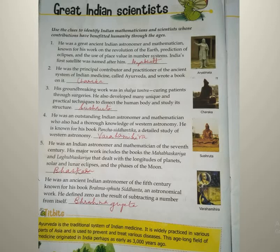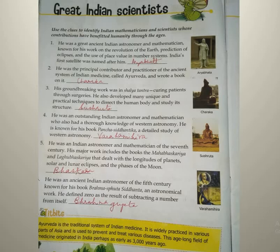He was an outstanding Indian astronomer and mathematician who also had a thorough knowledge of Western astronomy. He is known for his book Panch Siddhantika, a detailed study of Western astronomy. Astronomy is related to space, planets, galaxies — everything which is in space. He was very much interested in astronomy and also wrote the book Panch Siddhantika. The question may also arise: who is the author of Panch Siddhantika? The answer is Varahamihira.